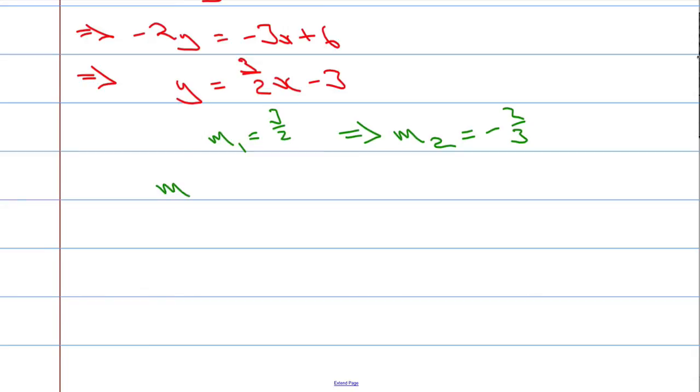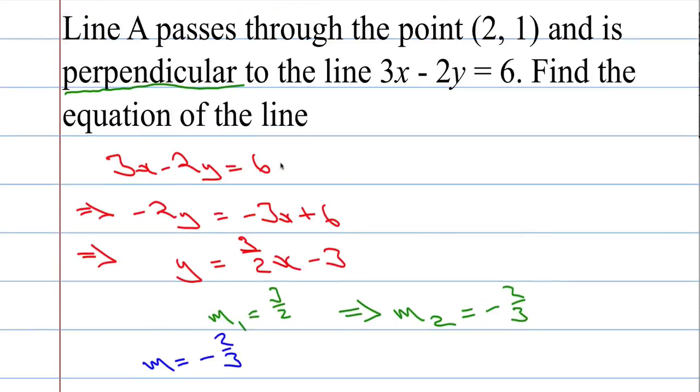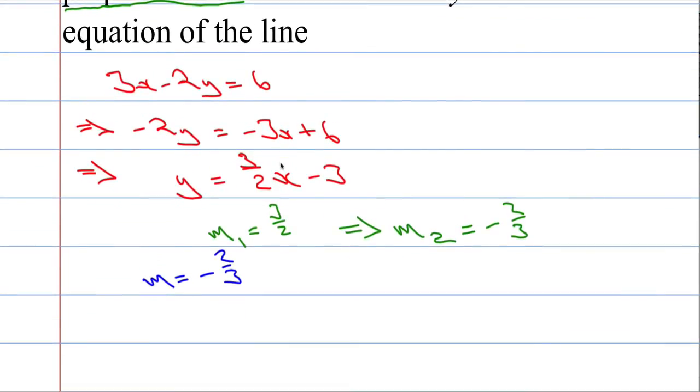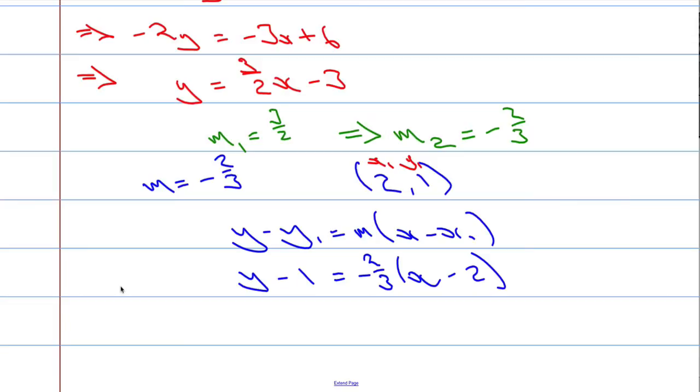So the gradient for this particular line, m must equal negative 2 over 3. And the point that we're dealing with is 2, 1. So we're going to use y minus y₁ equals m times x minus x₁. Substitute the values in. y minus, well the y₁ is here, this is x₁. So y minus 1 equals m which is negative 2 over 3 times x minus x₁ minus 2.